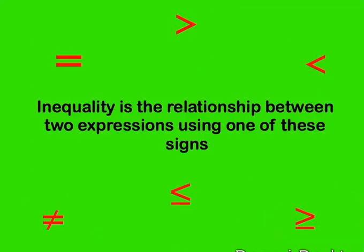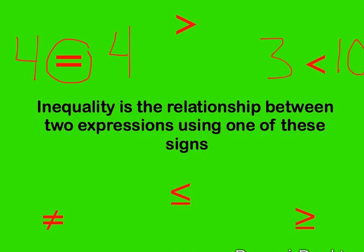An inequality is the relationship between two expressions using one of these signs. For example, 4 equals 4 — the equal sign shows the relationship between 4 and 4. Or for example, 3 is less than 10, so the less than sign shows us the relationship between 3 and 10.